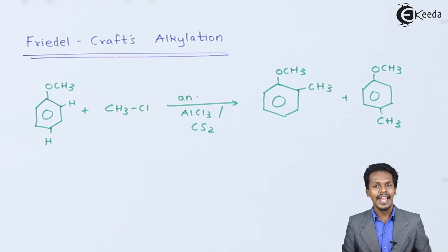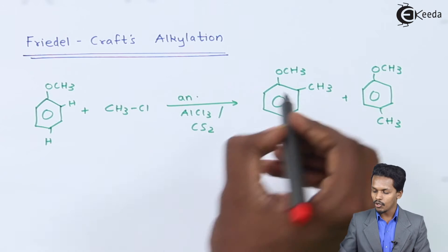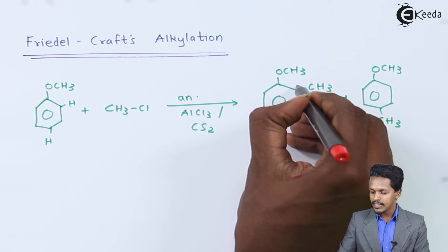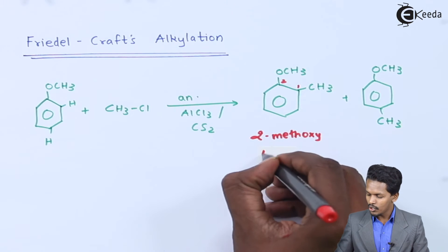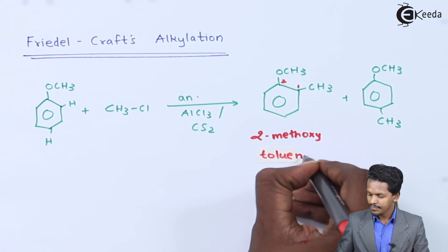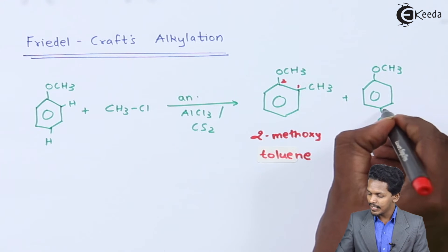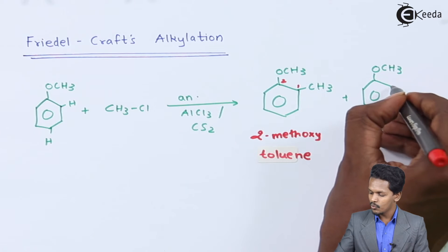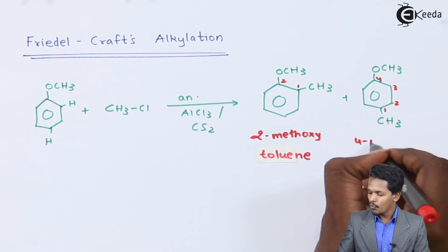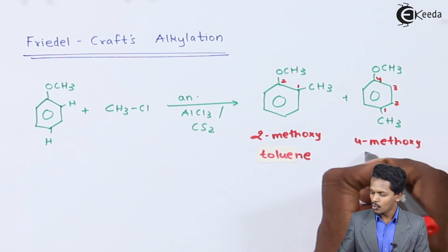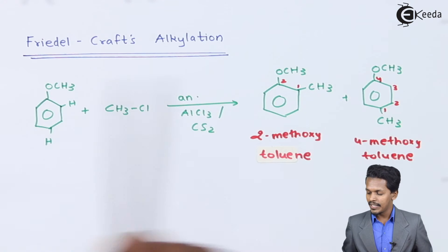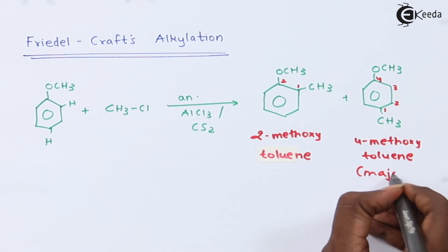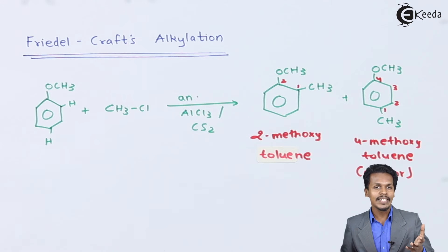The ortho product is named 2-methoxytoluene, with carbon one bearing the OCH₃ group and carbon two bearing the methyl group. The para product, with the methyl group at carbon four, is named 4-methoxytoluene. The major product obtained is 4-methoxytoluene.